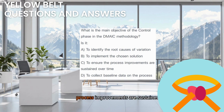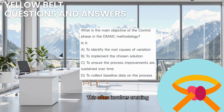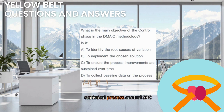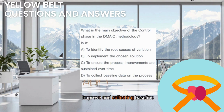The correct answer is C — to ensure the process improvements are sustained over time. The Control phase is all about locking in the improvements achieved during the Improve phase. Its primary goal is to establish mechanisms to monitor the process, respond to any deviations, and ensure that performance gains are maintained long term. This often involves creating control plans, updating standard operating procedures (SOPs), implementing statistical process control (SPC) charts, and training staff on the new process. Without a solid Control phase, processes often drift back to their old ways. Identifying root causes happens in Analyze, implementing solutions is the focus of Improve, and collecting baseline data occurs in Measure. The Control phase makes improvements stick.